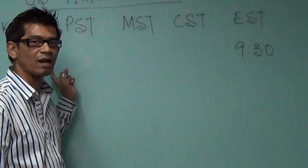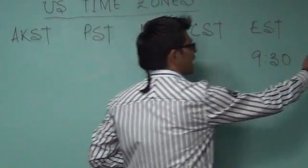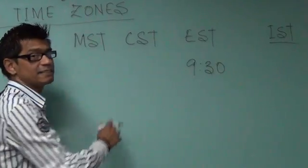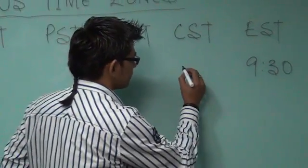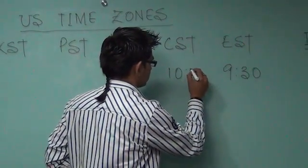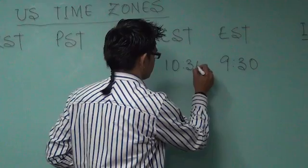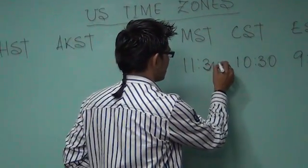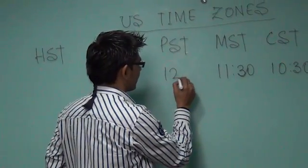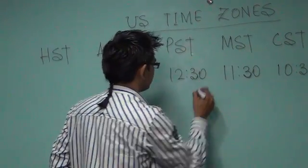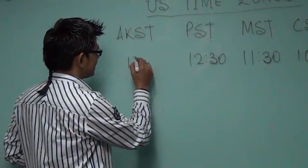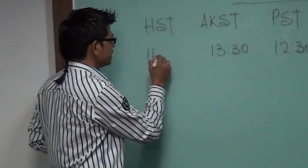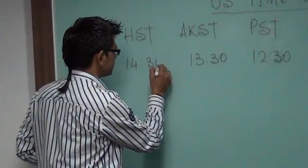The difference between IST and CST would be ten and a half hours, then eleven and a half hours for MST, twelve and a half hours for PST, thirteen and a half hours for Alaskan Standard Time, and fourteen and a half hours for Hawaiian Standard Time.